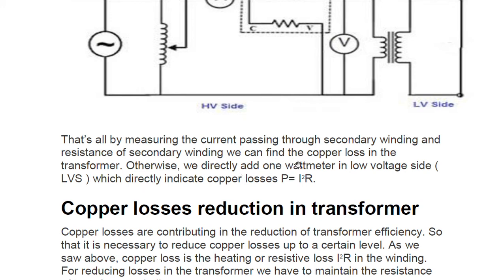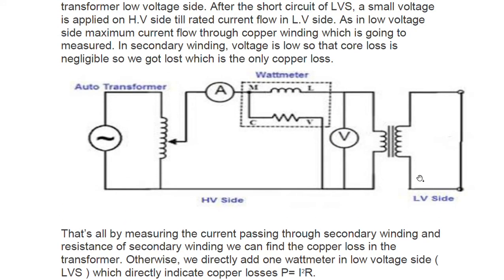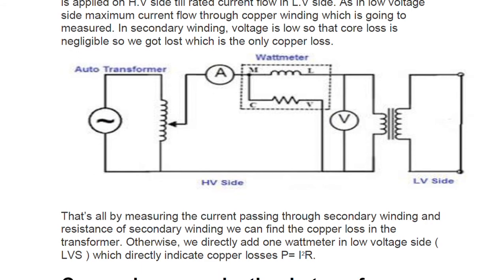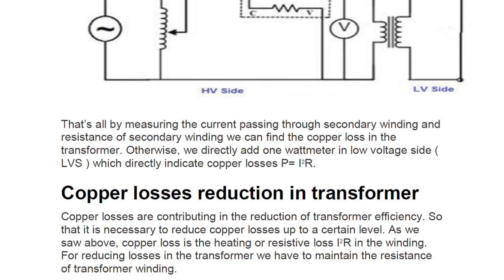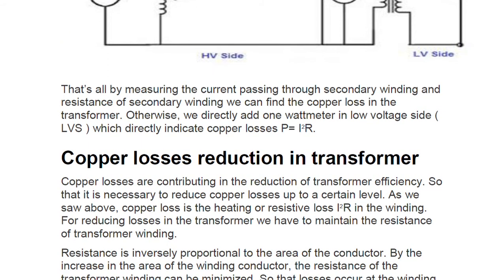By measuring the current passing through the secondary winding and the resistance of the secondary winding, we can find the copper loss. Alternatively, we directly add a watt meter on the low voltage side. The watt meter here directly indicates the copper loss, since P = I²R. Copper loss is proportional to the square of the current, so as you increase the load, copper loss increases.